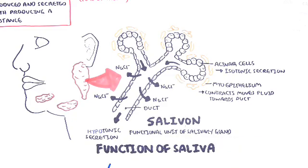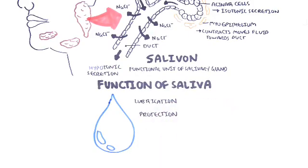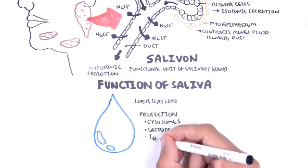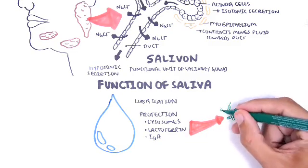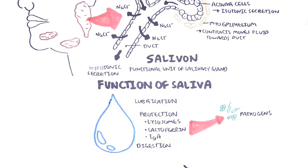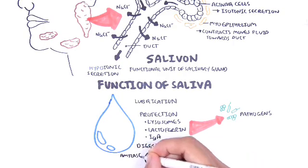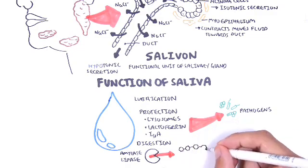The saliva has three main functions: lubrication, protection, and digestion. Protection occurs in a few ways. One way is that it contains lysosomes which attack the bacterial cell walls, lactoferrin which chelates iron that is normally needed by many bacteria for replication, and IgA which is an immunoglobulin and helps in the immune response. Digestion occurs because saliva contains amylase and lingual lipase, which help break down carbohydrates and fats, respectively.